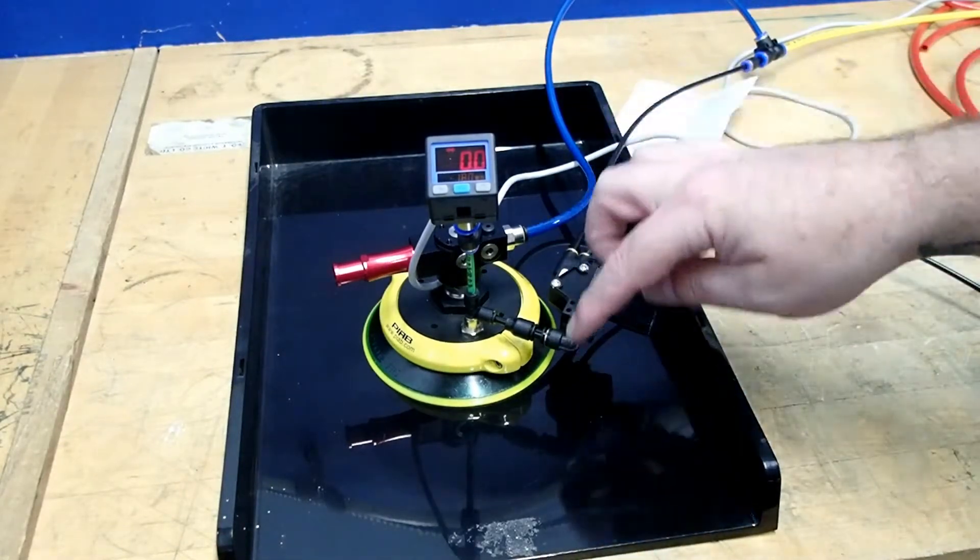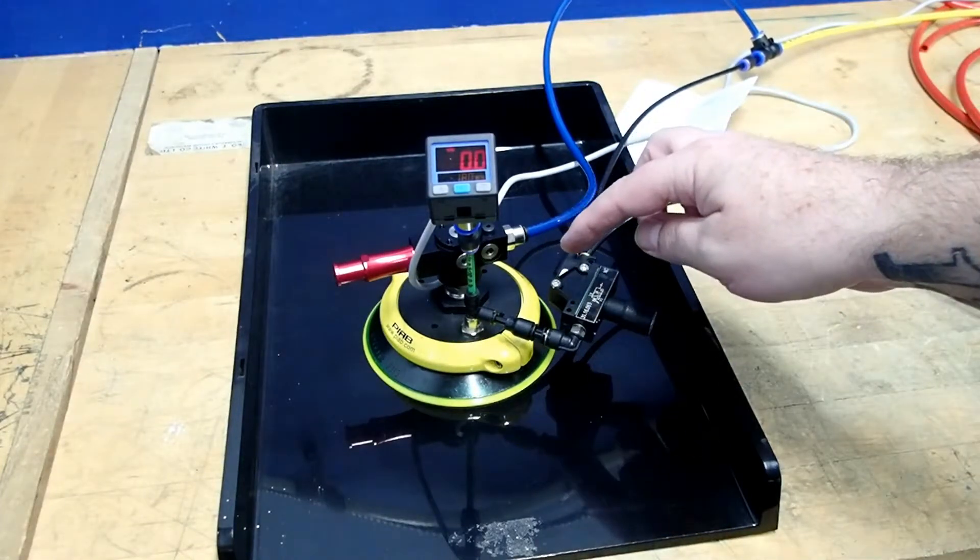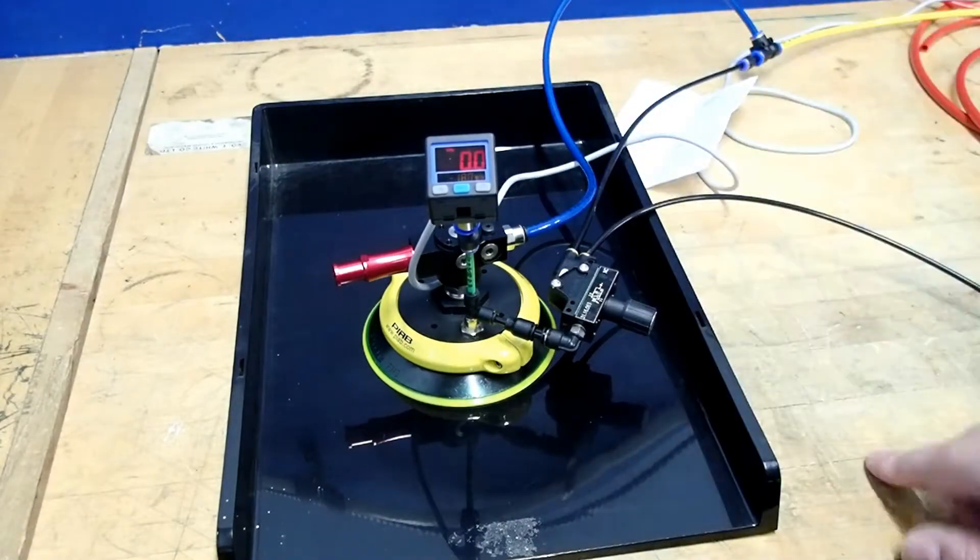As stated earlier, it just utilizes the three ports. Port number one is going to be for your pneumatic supply in, and we have ours teed off and we're feeding our vacuum generator with the same pneumatic supply.